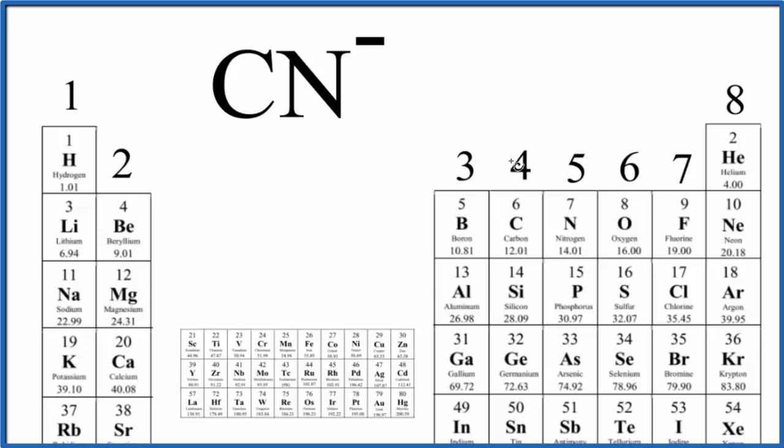13, 14. Here's carbon in group 14. That's going to have four valence electrons.